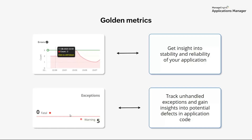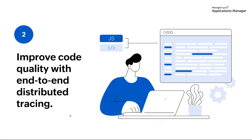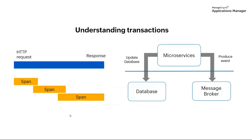Let's move on to the third topic: improving code quality with end-to-end distributed tracing. When it comes to application performance monitoring, it's all about the transactions. Typically a transaction can be an HTTP request — when a request comes in, the APM starts a new transaction. Until the response is sent back, it instruments the code and generates spans that give you a nice waterfall model showing what the transaction is spending its time on.